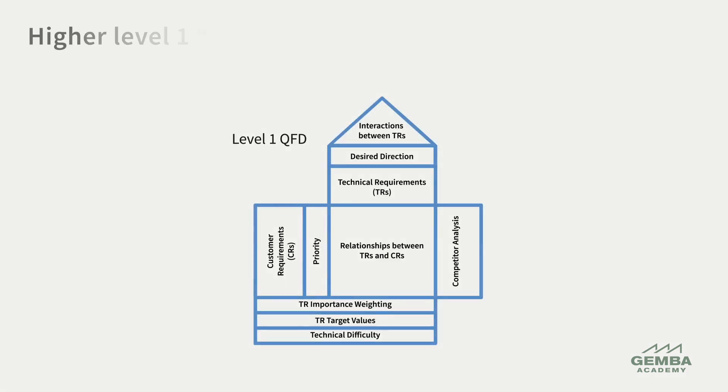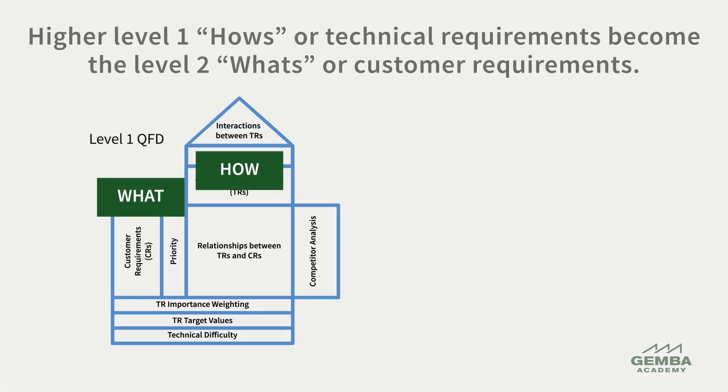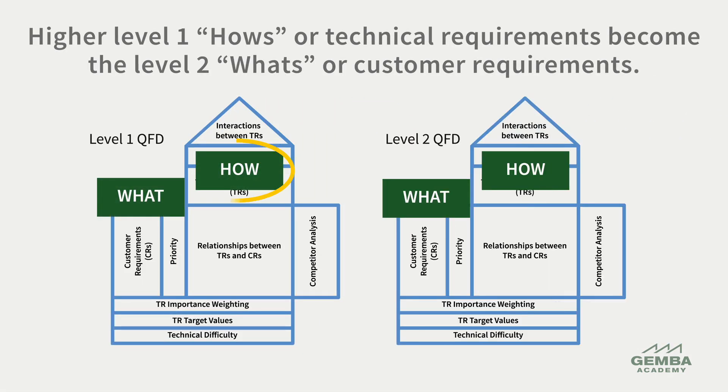The technical requirements from the higher level, or the hows, are deployed to the lower level to become the whats. In other words, the level 1 technical requirements act as the voice of the internal customer requirements for the level 2 design activity. This transfer of the higher level how to the lower level what happens at each stage of deployment.